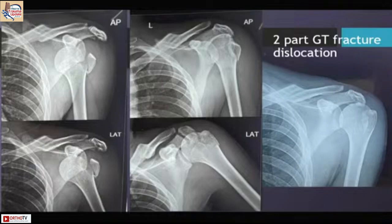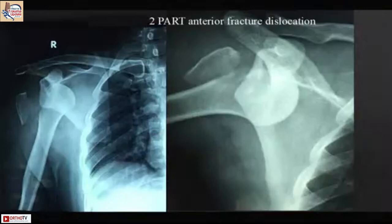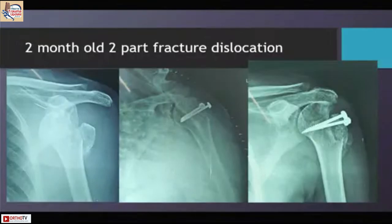This case is a two-part greater tuberosity fracture dislocation where closed reduction under general anesthesia was done; the fracture seated back into the defect and we did conservative management with a fair result. This next case is a two-week-old two-part fracture dislocation where the biceps was entrapped in the defect — we had to retrieve the biceps and perform fixation. We did a screw fixation here.